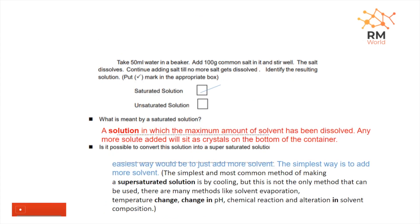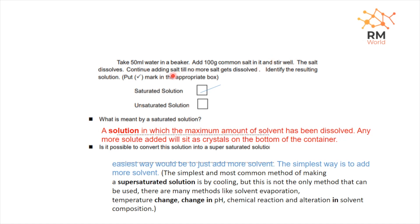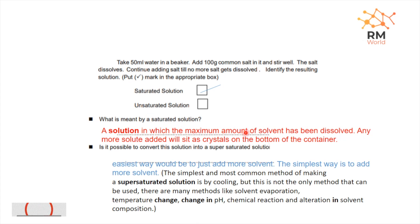Here we have an experiment. We have 100 g of water in a 50 ml of water. We will dissolve the salt. This solution becomes saturated. What is a saturated solution? The solution will dissolve the maximum amount of solute. If we add more solute, we will see crystals form.